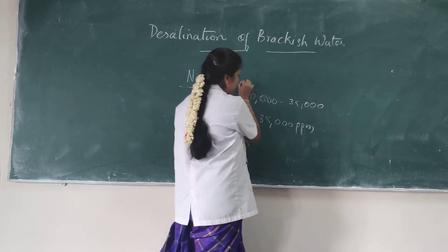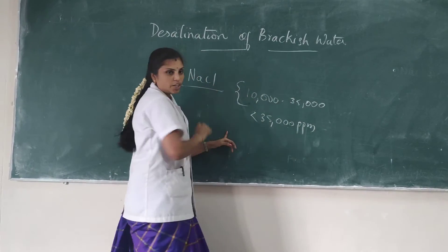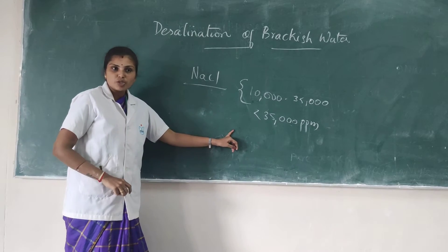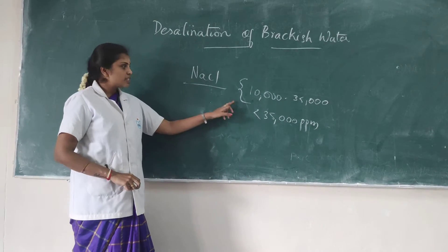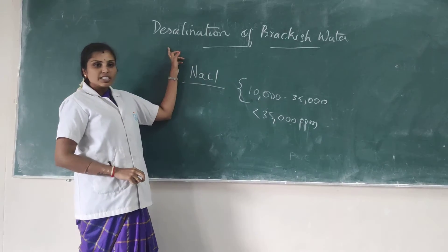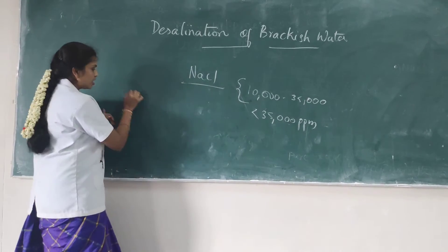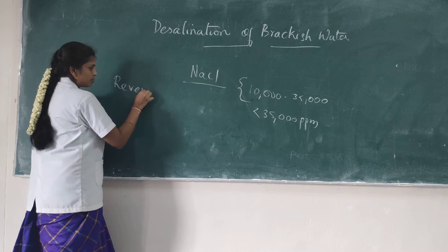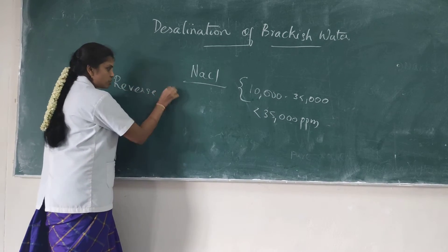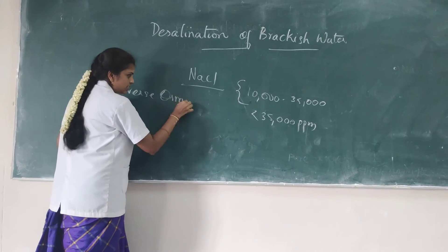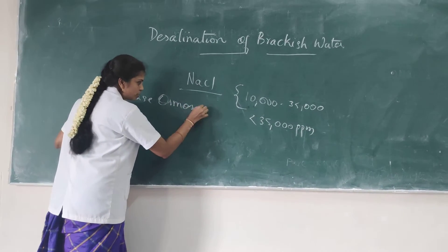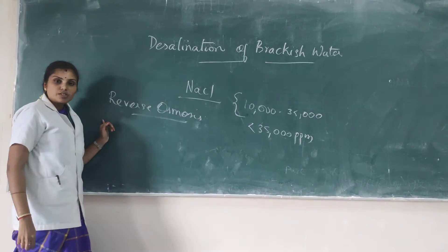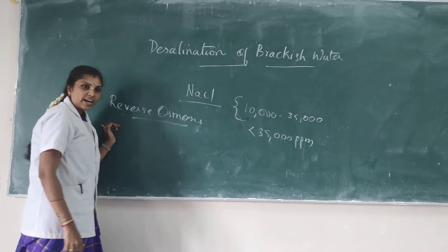From this brackish water, we are going to remove the common salt. That method is done by desalination, and the method is called the reverse osmosis method. As you have already learnt about reverse osmosis — from that, two different concentrated solutions are separated by a semi-permeable membrane.